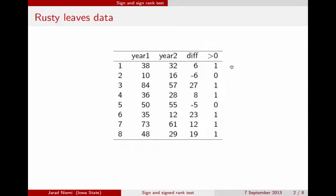The sign test just looks at how many of these differences are greater than zero. So in this case we have a one everywhere where it's greater than zero and a zero if it's less than zero, if the difference between the number of rusty leaves in the two years is less than zero.